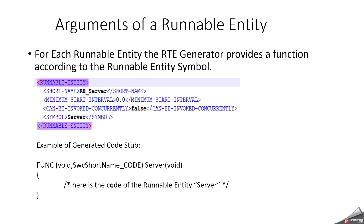When we discussed about the client-server interface, we clearly discussed how the operation invoked event works and how we can have multiple operations inside an interface. For runnable entities triggered from a client-server operation, the symbols of the automatically created arguments can manually be defined by adding a symbol to the configuration parameter argument. This is the way RTE handles the arguments of a runnable entity.